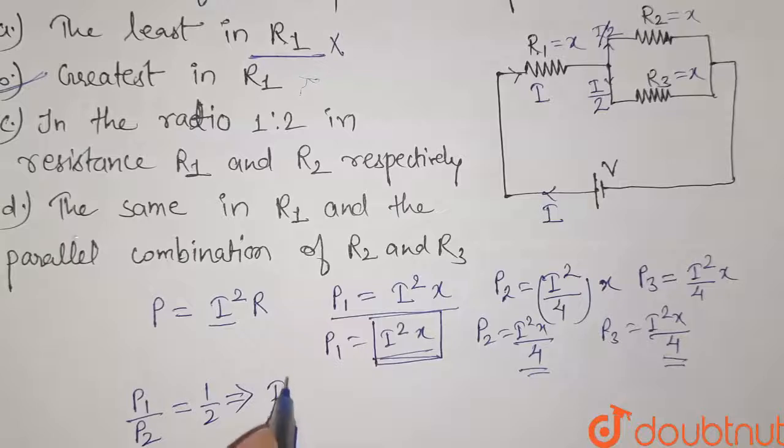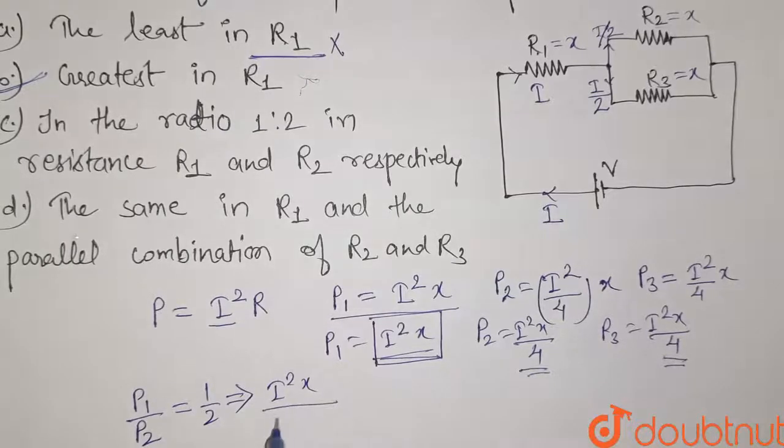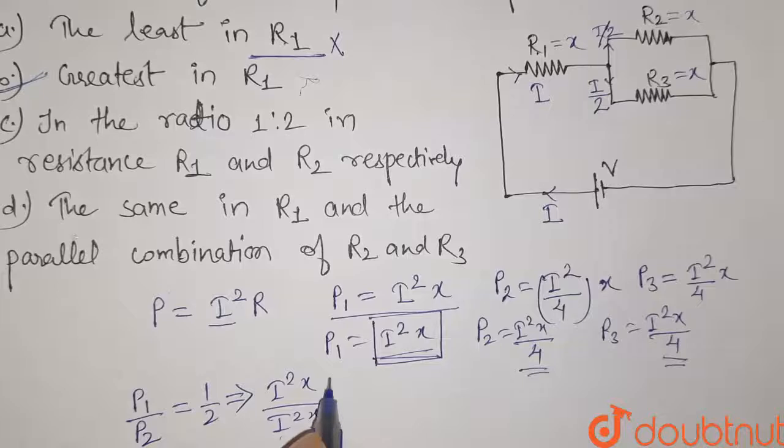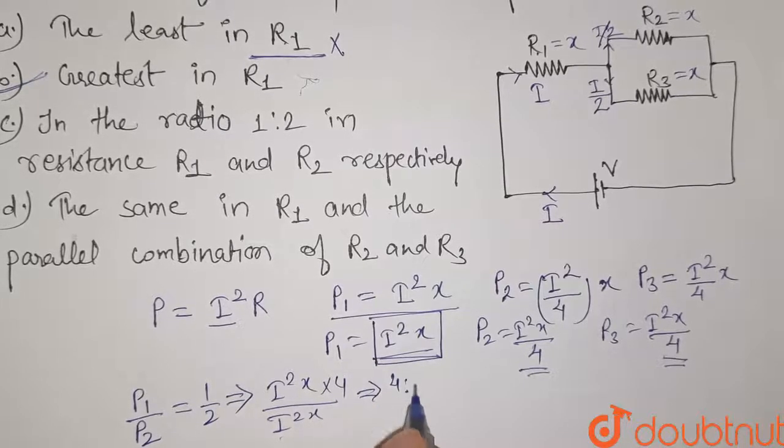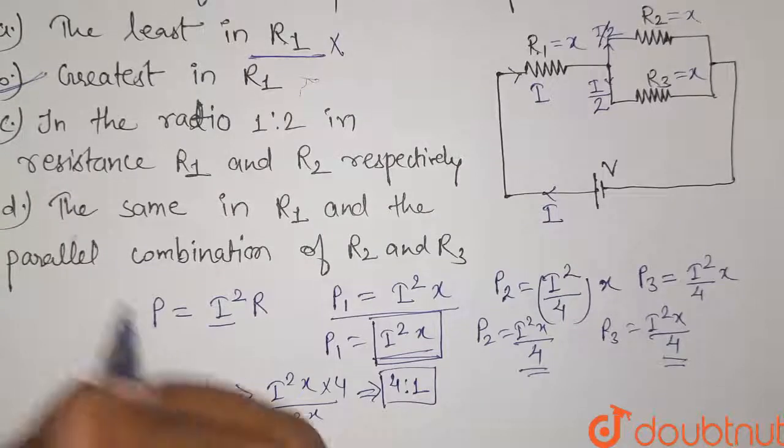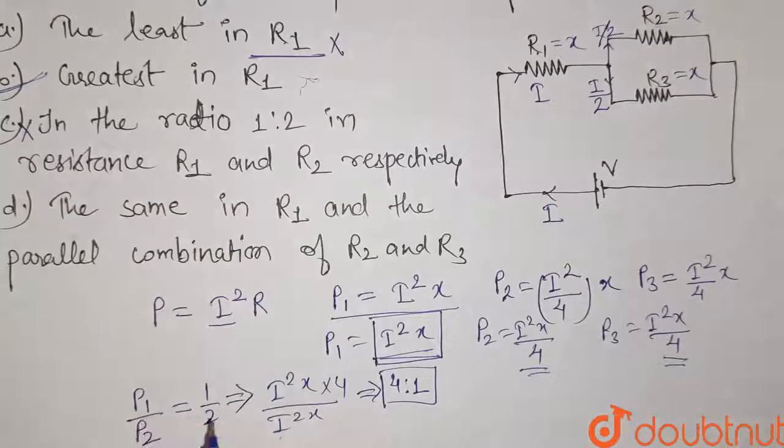So it is given that P1 divided by P2 equals... P1 equals I squared X, P2 equals I squared X divided by 4, that will come in numerator. So it equals 4 is to 1, which is not equal to 1 by 2. So this is also a wrong option.